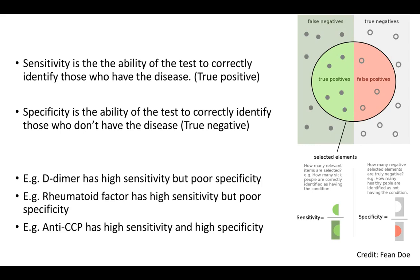Regarding statistics: sensitivity is the ability of a test to correctly identify those with the disease - the true positive rate. Specificity is the true negative rate - identifying those without the disease. For example, D-dimer has high sensitivity but poor specificity: if negative it reliably rules out pulmonary embolism, but a positive result doesn't confirm PE. Similarly, rheumatoid factor has high sensitivity but poor specificity, making anti-CCP the most useful test for rheumatoid arthritis.